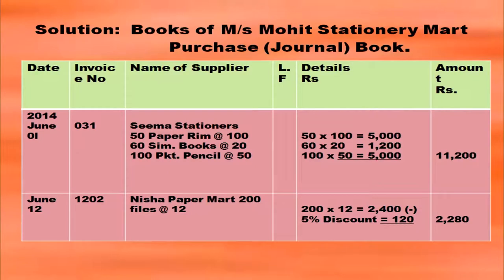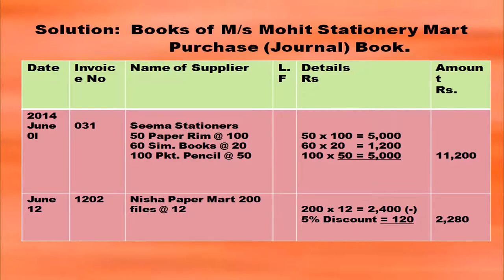You have to write in the books of Messrs. Mohit Stationery Mart, then specify which book you are preparing: purchases book or purchases journal. Date in the respective column, invoice number, and the name of suppliers — Seema Stationers and Nisha Paper Mart — in respective dates. What you have purchased: 50 paper rims at rupees 100 and 60 simple books at rupees 20. So 50 × 100 = 5,000 and 60 × 20 = 1,200. Also 100 packet pencil at rupees 50: 100 × 50 = 5,000. So 5,000 + 1,200 + 5,000 = 11,000 in the amount column.